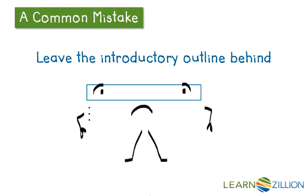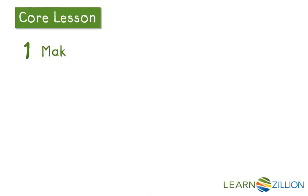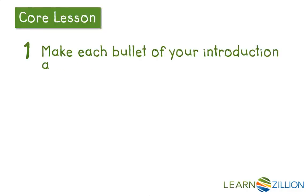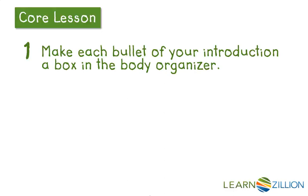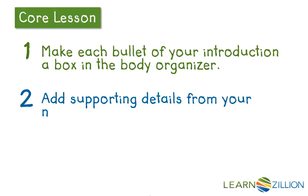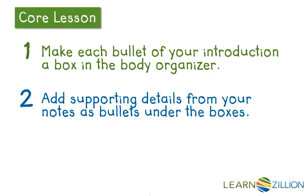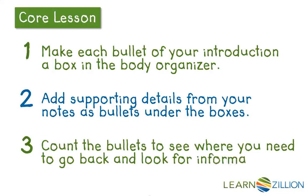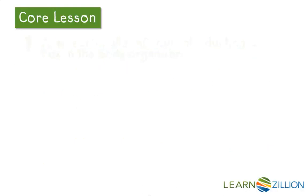In order to include that outline in our minds as we outline the body of the essay: first, make each bullet of your introduction a box on the body organizer. Then add supporting details from your notes as bullets under the boxes. And third, count the bullets to see where you need to go back and look for information. Watch me as I follow these steps in organizing the body of my research paper.